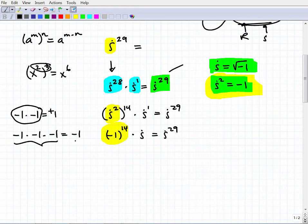Here it's three times. I'm going to end up with a negative one. So negative one to an even power. And here's kind of the rule. Negative one to the even power will end up being a positive one. So this is just going to be one times i, or just a positive i, or just i itself.